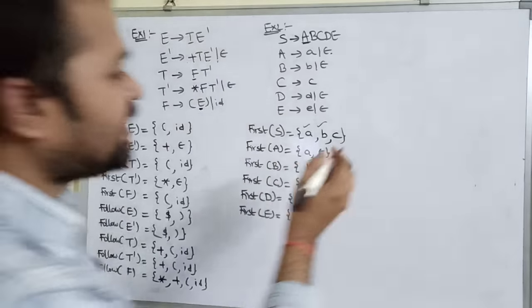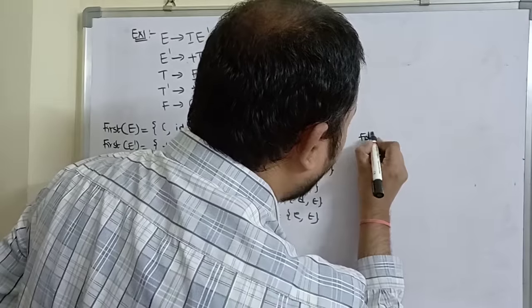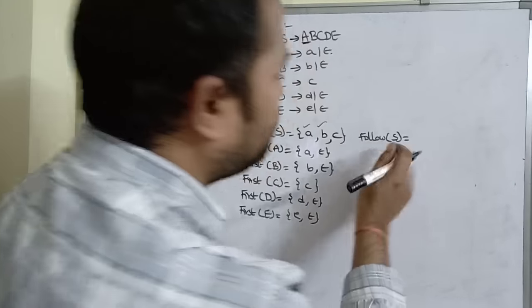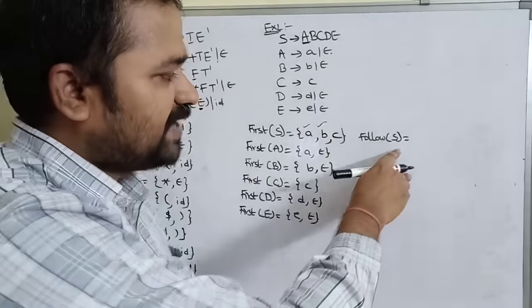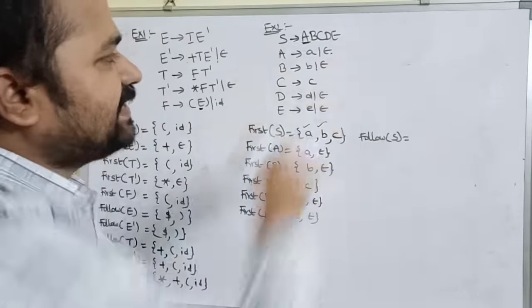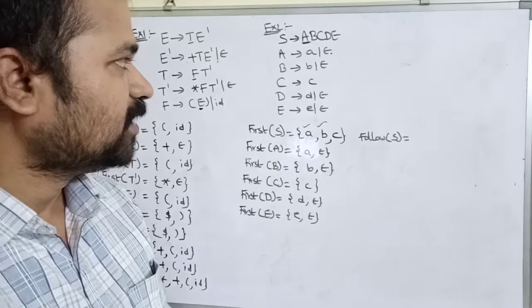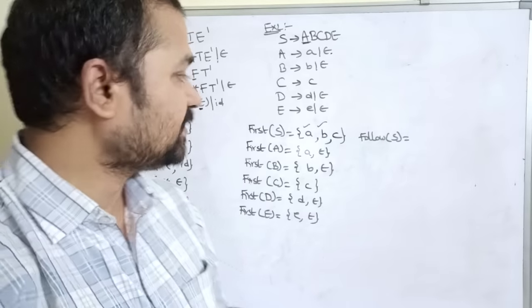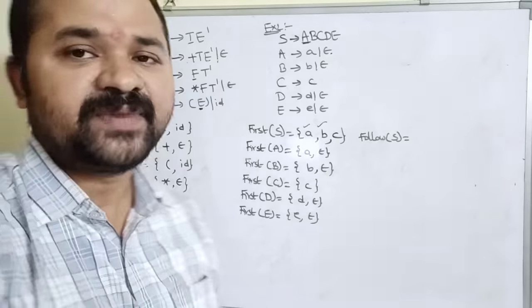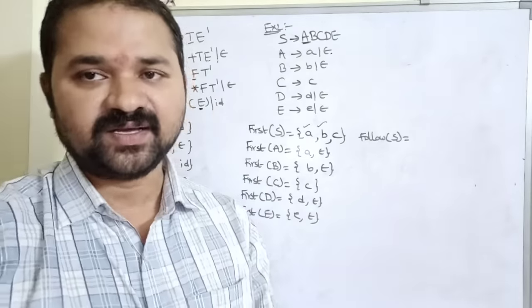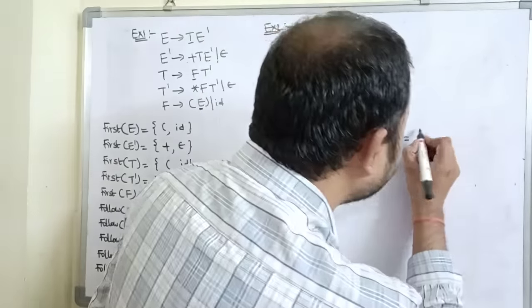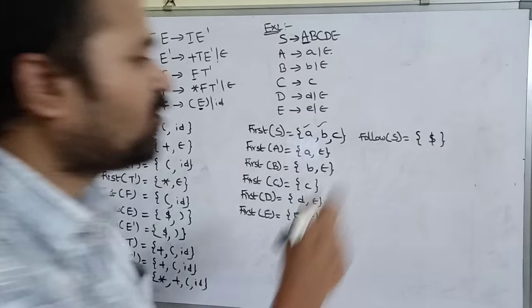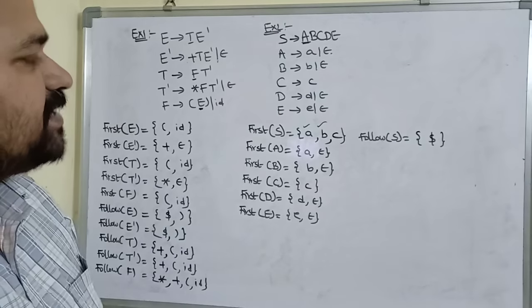Now calculating FOLLOW for example 2. FOLLOW of S: S is the starting symbol and there is no S in the right-hand side, so FOLLOW of S = {dollar}.